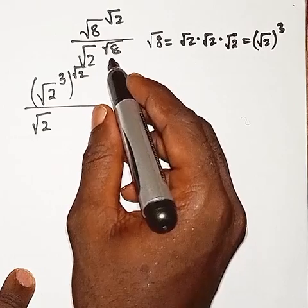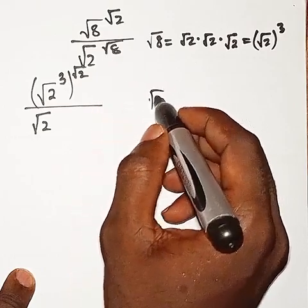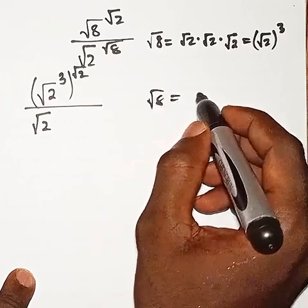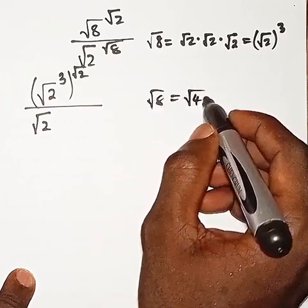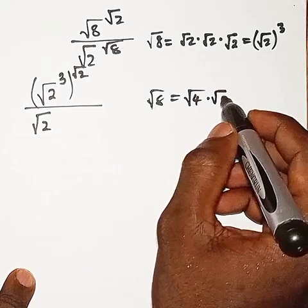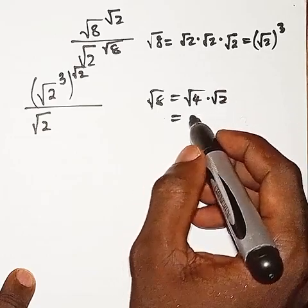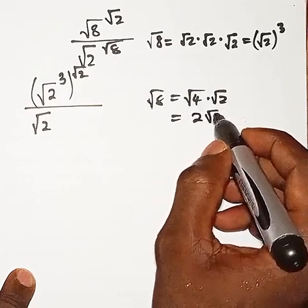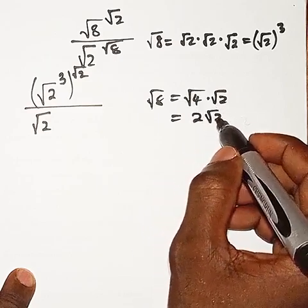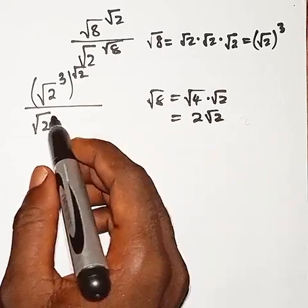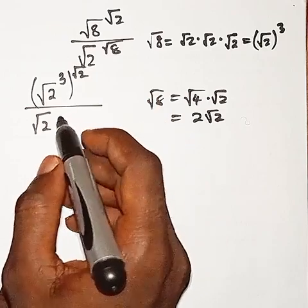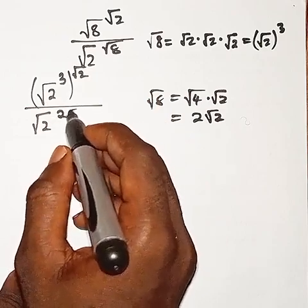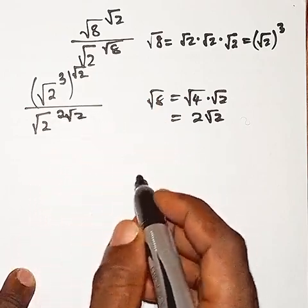Now, we have root 8 here. Root 8 here can also be split as having root 4 times root 2. So now, what is the square root of 4? The square root of 4 is 2, then this remains root 2. So this root 8 here will be replaced by 2 root 2.